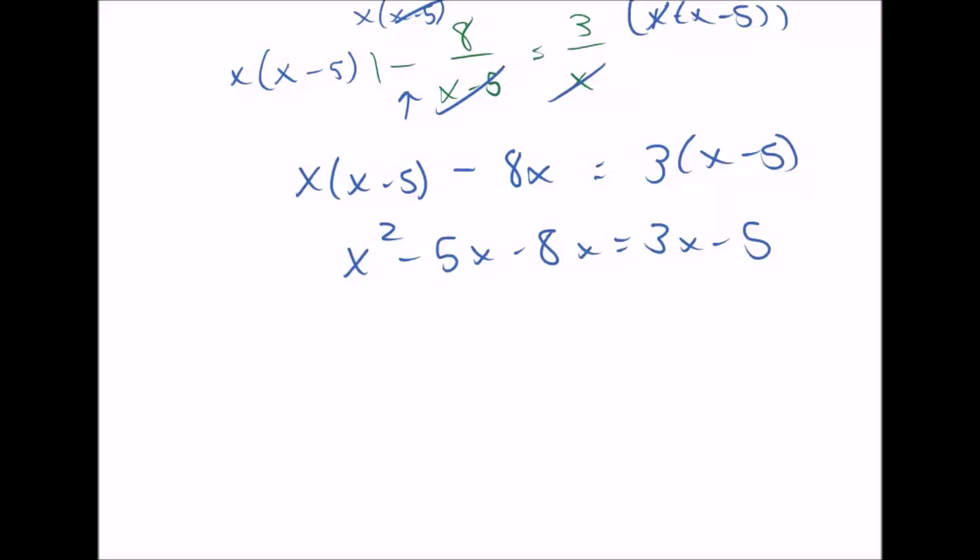x squared minus 5x minus 8x equals 3x minus 5. Solve for x. Since we have an x squared term and 2 is the highest degree, we need to get everything to one side. We need to set this equal to 0. So we're going to have to subtract all that, or get that all to the other side. But let's simplify what we have on the left first. So we have x squared minus 13x. Now it's time to subtract this 3x over and add the 5. So we have x squared minus 16x plus 5 equals 0.